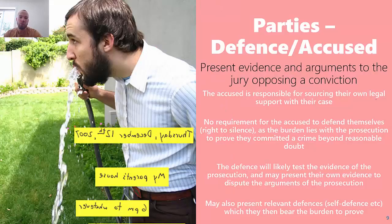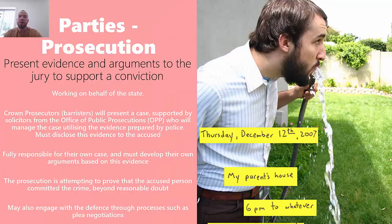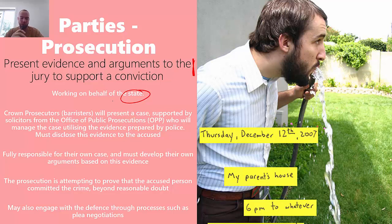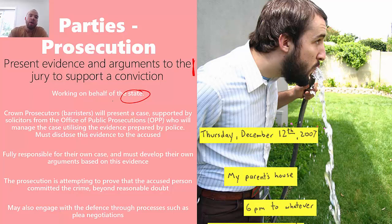Then we have the two parties. The catch-all role for the prosecution is to present evidence and arguments to the court and jury to support a conviction for an indictable offence. The prosecution works on behalf of the state - on behalf of all citizens - to try and prove that an alleged offender has done the wrong thing, so the court can give them a consequence and promote social cohesion.